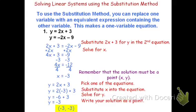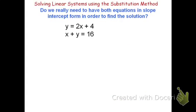Now let's look at another example. Here we have y equals 2x plus 4 and x plus y equals 16. The question is: do we really need both equations in slope-intercept form — that is, do both equations have to say y equals? It wouldn't be too tough to rewrite the bottom equation, but we really don't have to. Provided you have one equation that says y equals or one that says x equals, we can still use substitution.